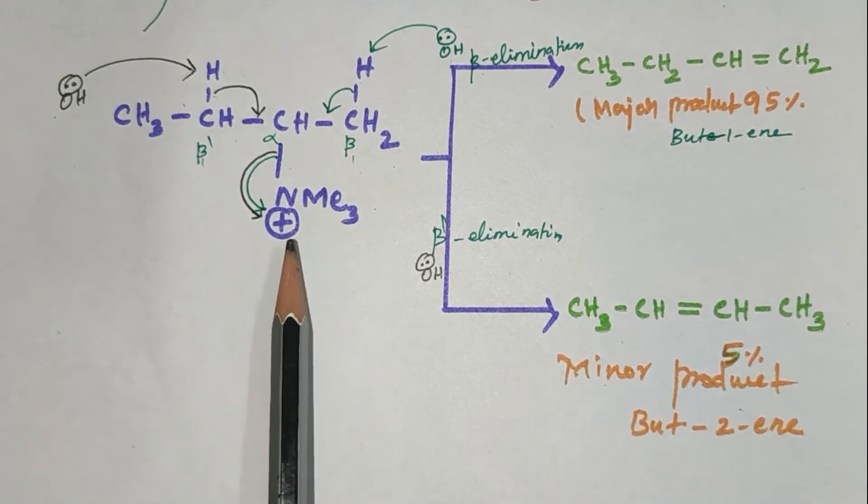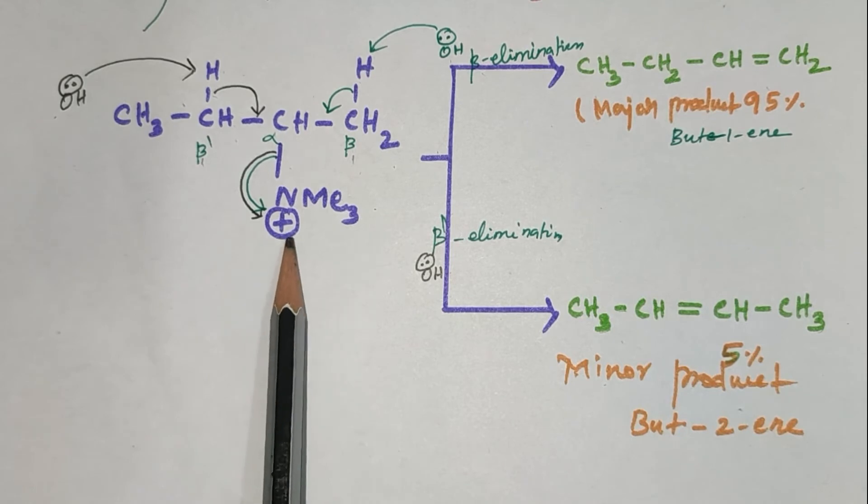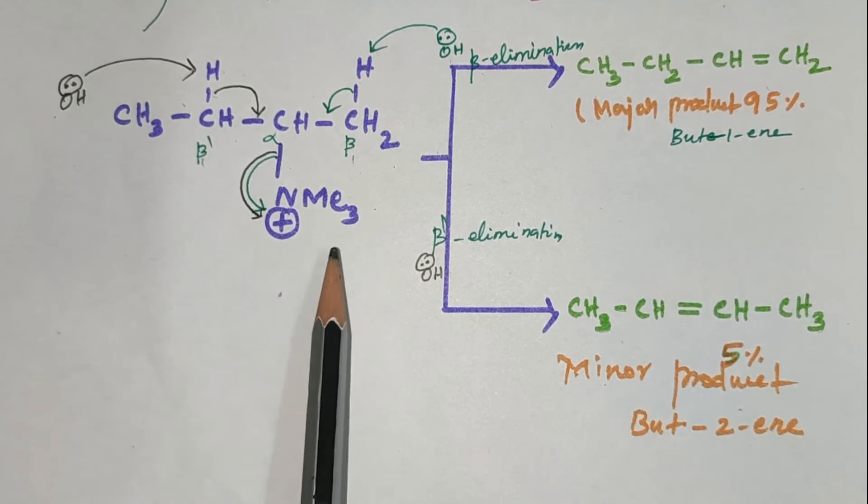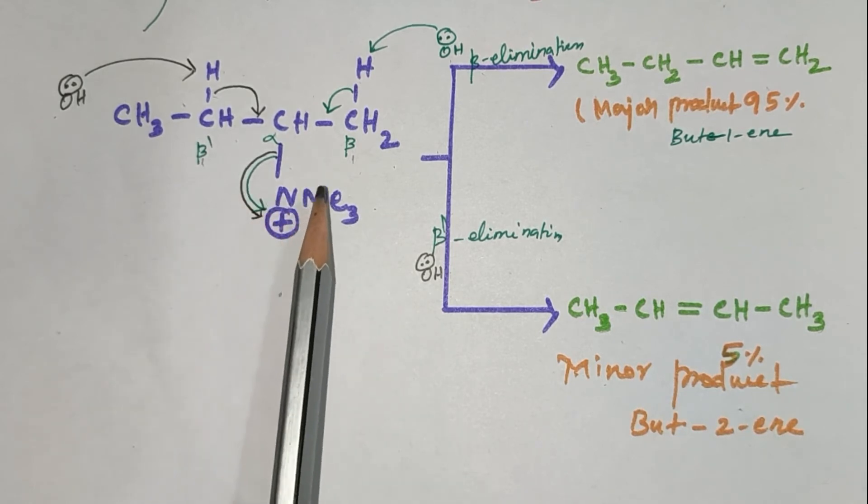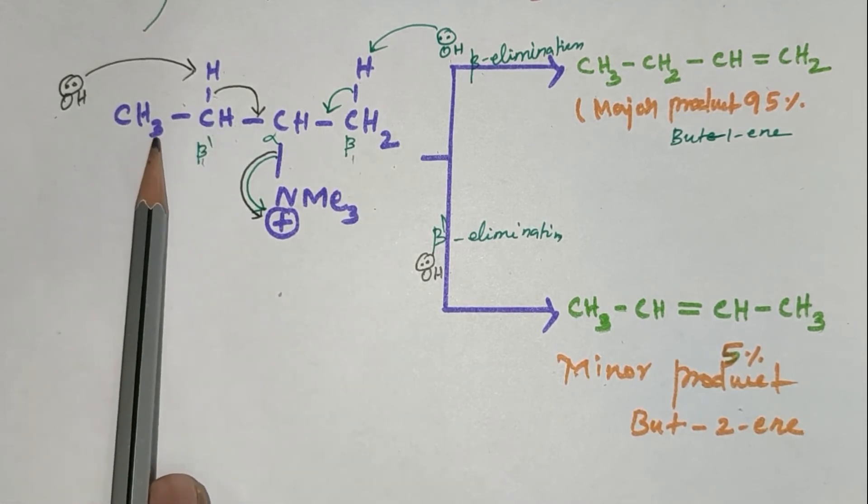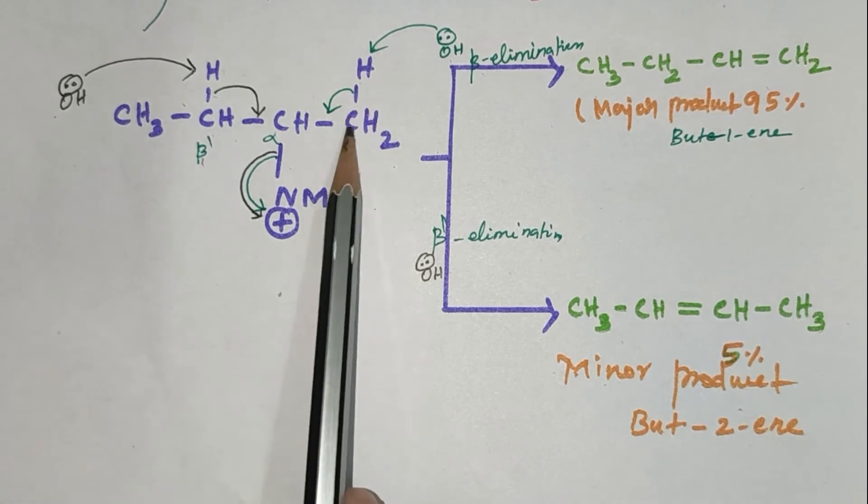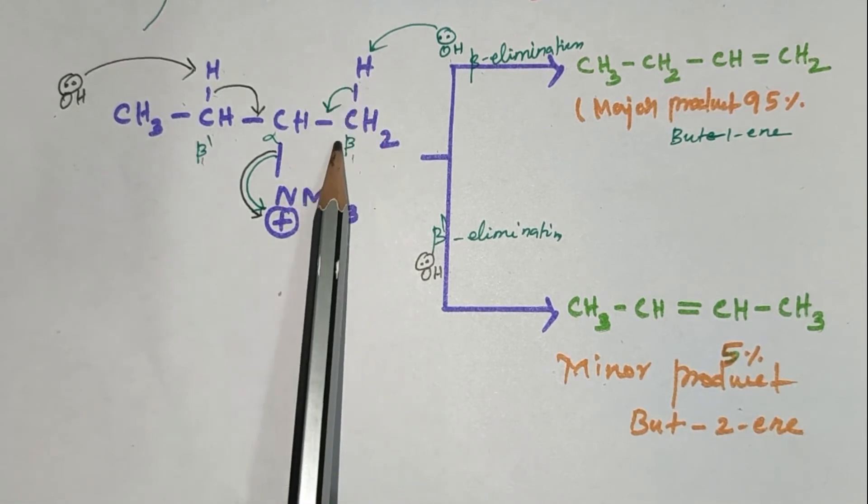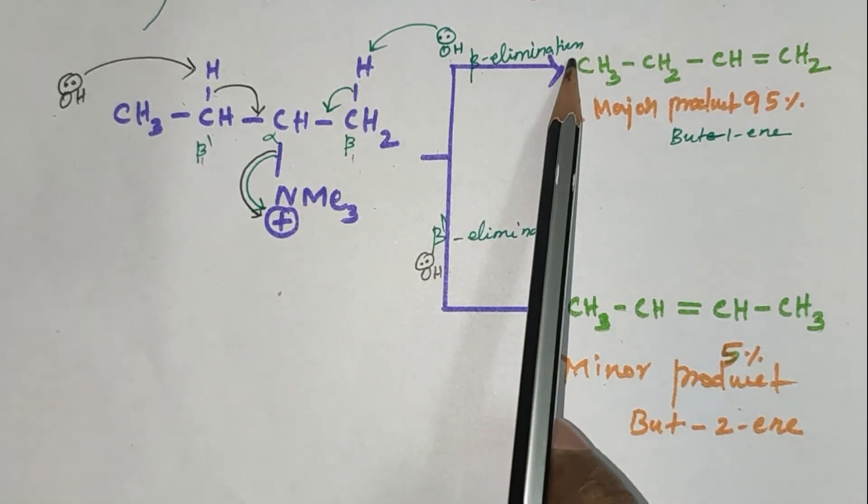Strong electron withdrawing effect of the Me3N+ group makes the hydrogen of the beta carbon more acidic. Beta dash is less acidic due to plus I effect of adjacent methyl group. More acidic beta hydrogen is removed to give predominant product.